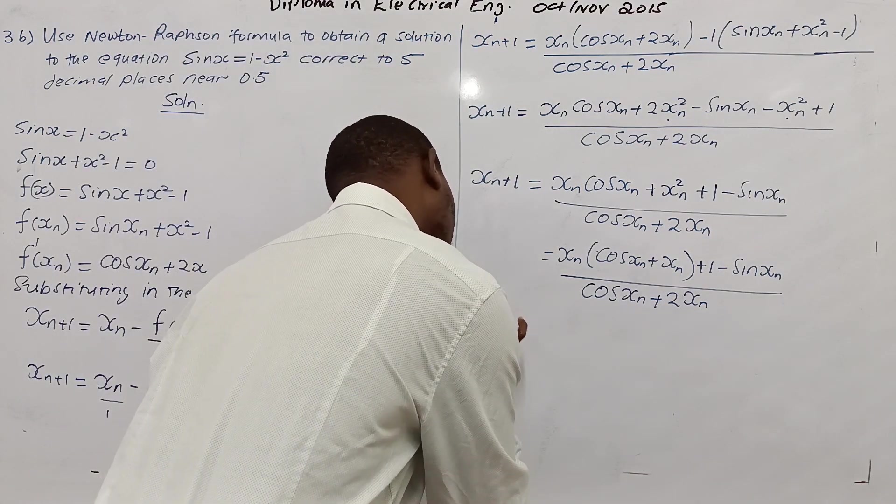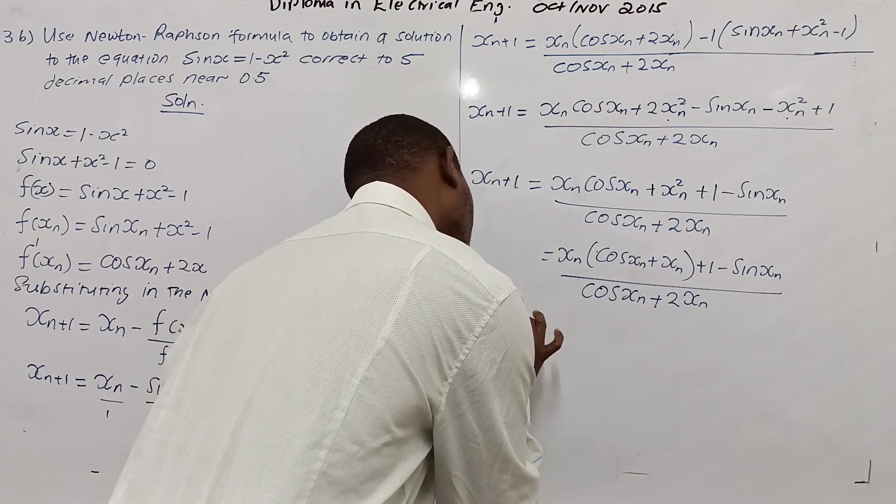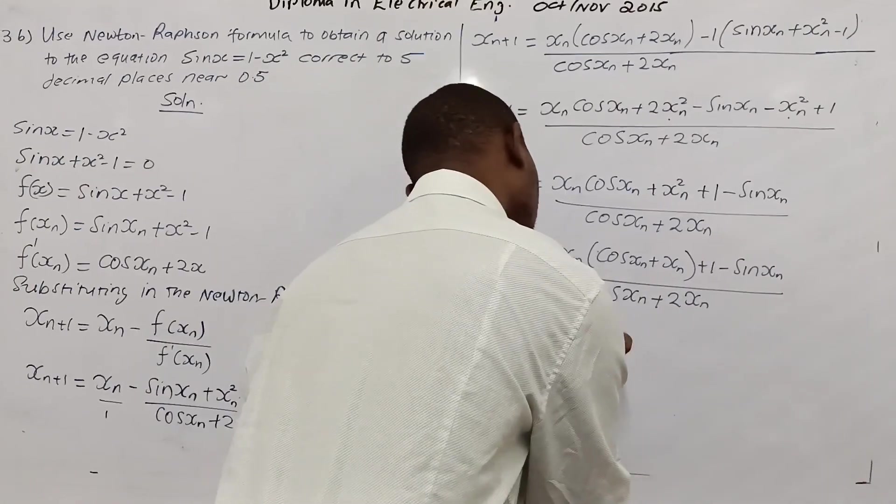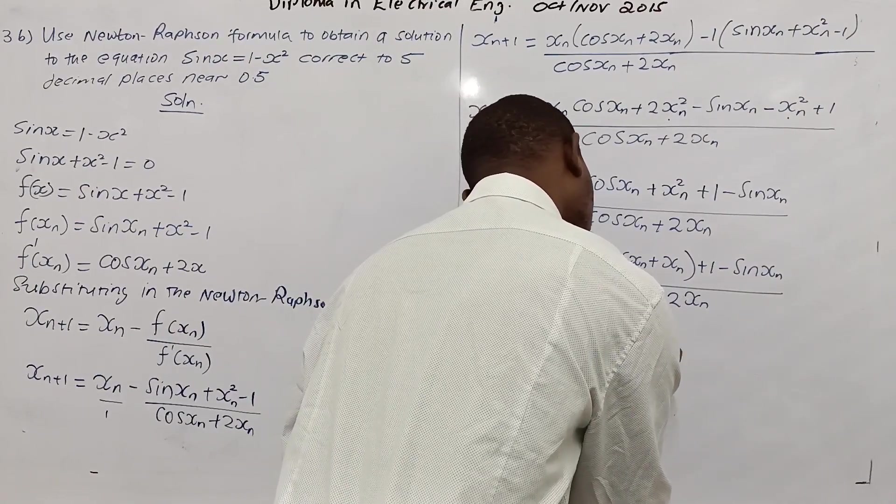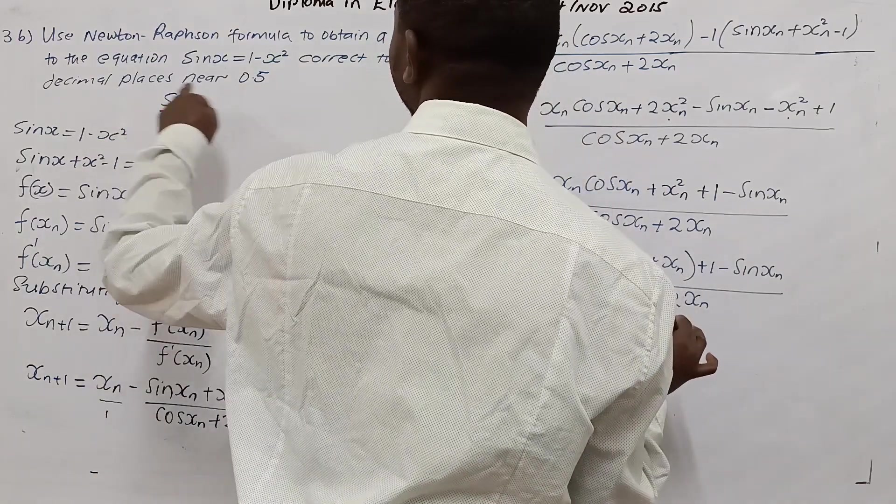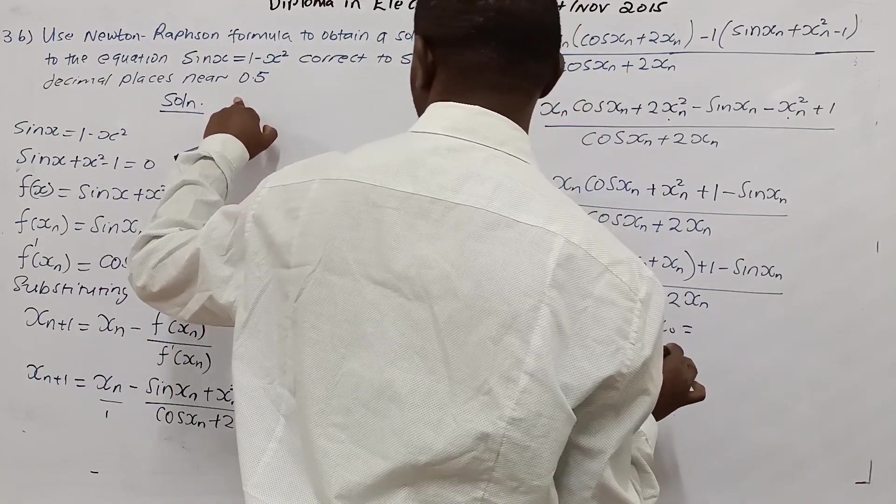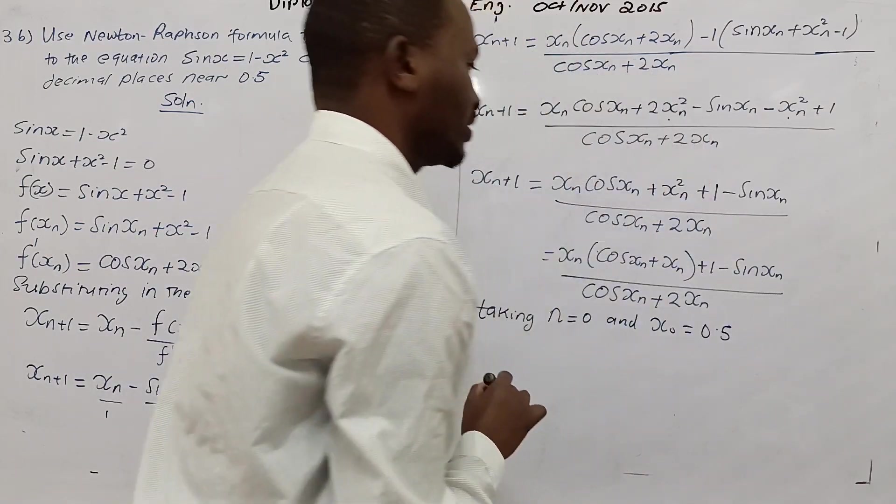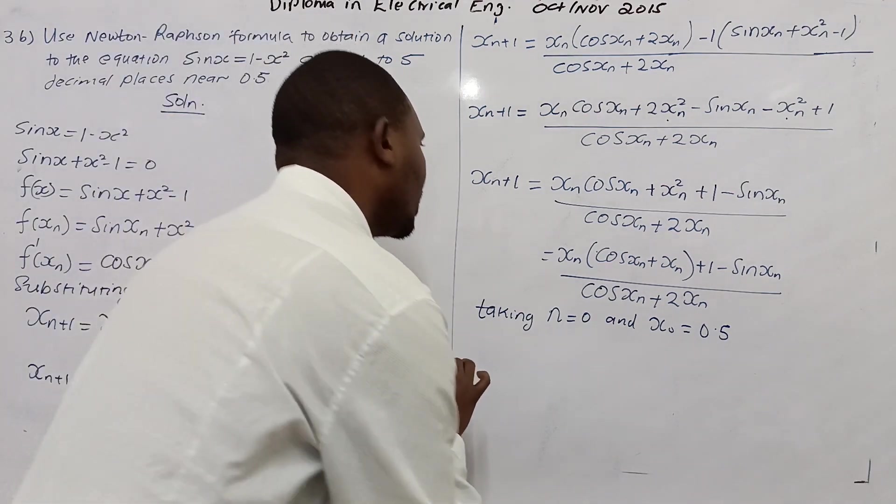Taking n equals 0, and I think we have been given, we have been told near 0.5, so x0 is 0.5.